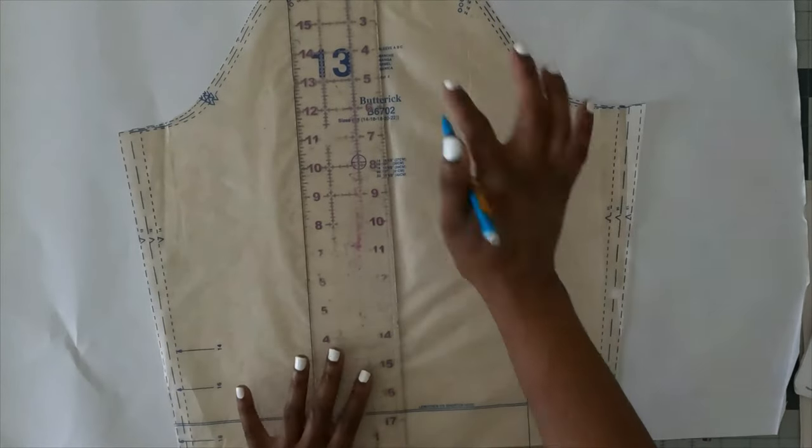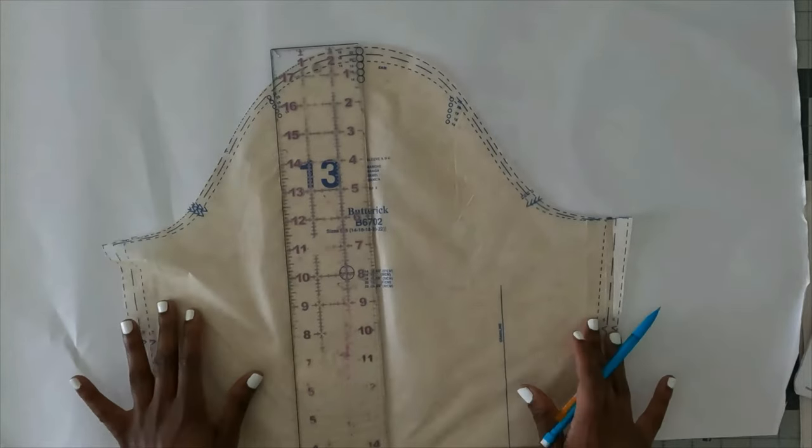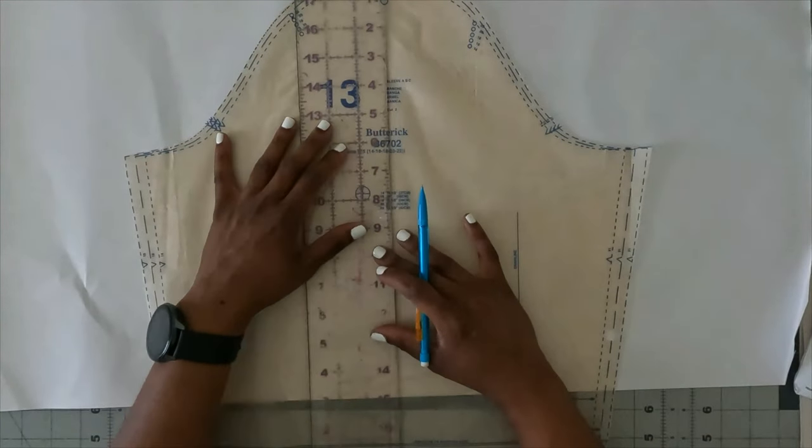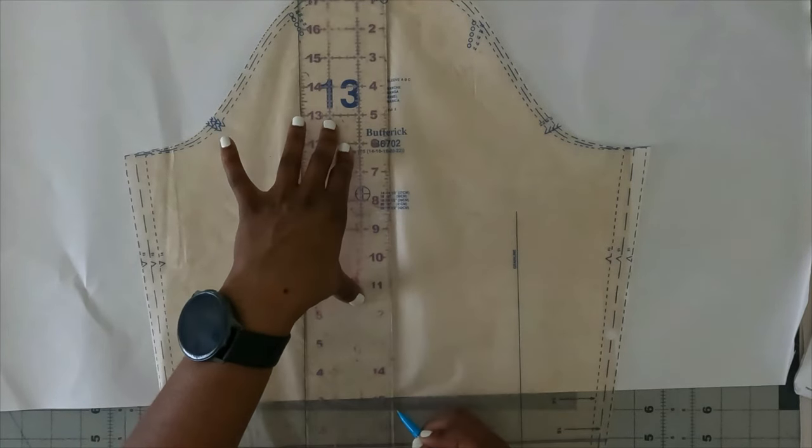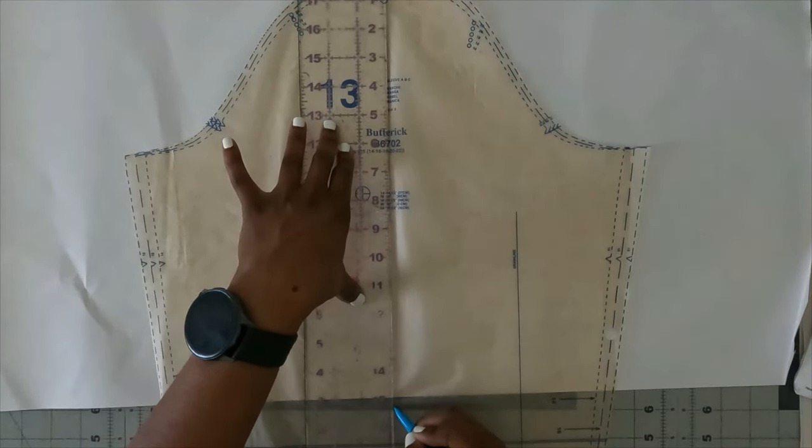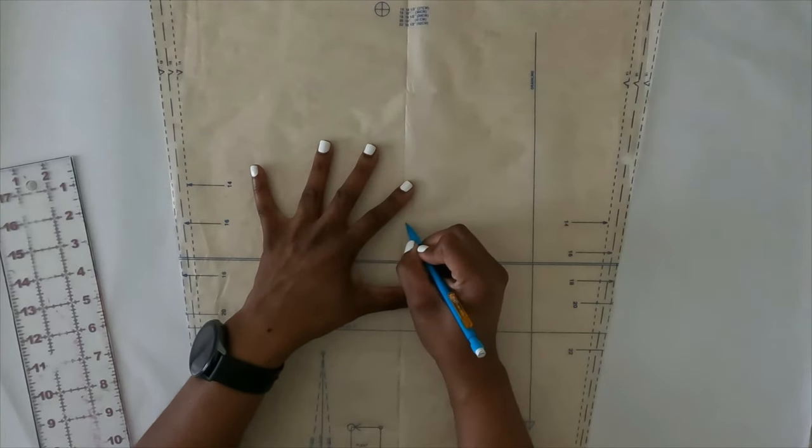So what I'm going to do is from the top, or the sleeve cap, I'm going to come down 15 and a quarter inch from that top. And I'm just going to make a dot. And that's all I'm going to do. So basically, my dot is all the way down here.